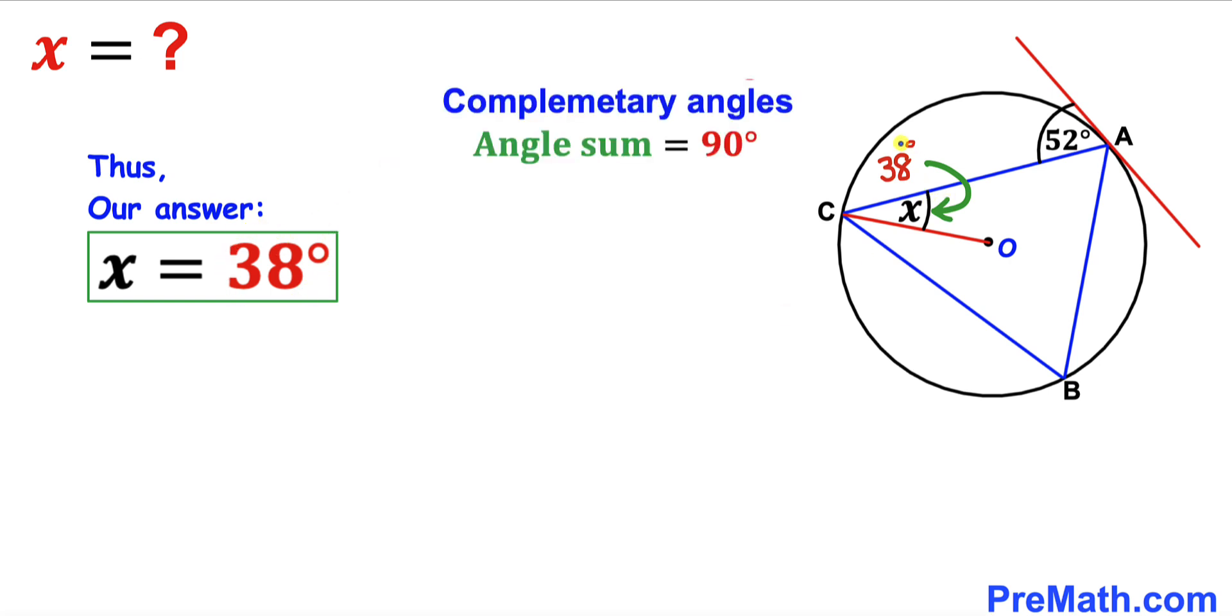Now we can see that these two angles, this 52-degree angle and this 38-degree angle, add up to 90 degrees. No wonder we call them complementary angles.